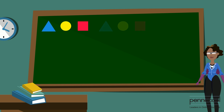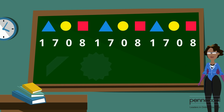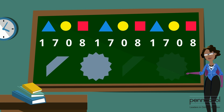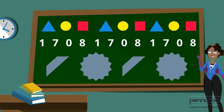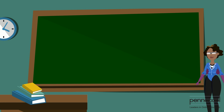A pattern is a repeated arrangement of numbers, objects, shapes, or even colors. Let's use shapes and objects for our examples.